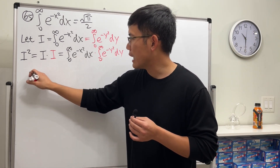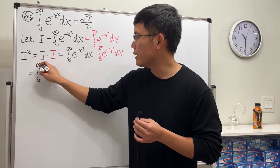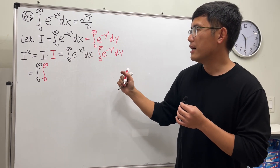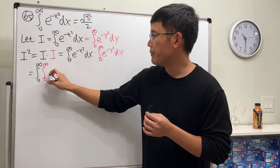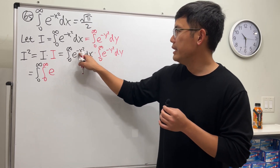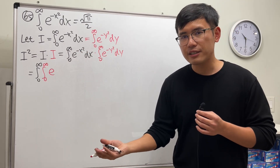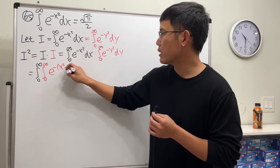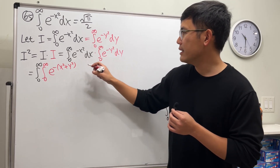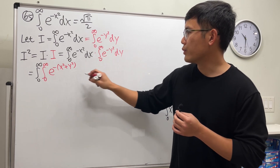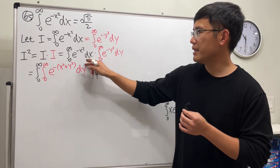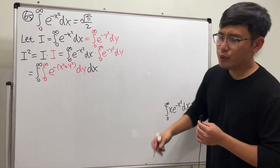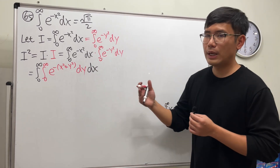This becomes a double integral: the red integral from zero to infinity, and then the black integral from zero to infinity. On the inside, we have e to the negative of x squared plus y squared — factoring out the negative. The inner integral is the first written, and the outer integral is the second. Now, how do we continue?